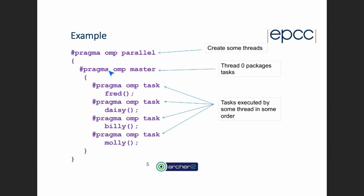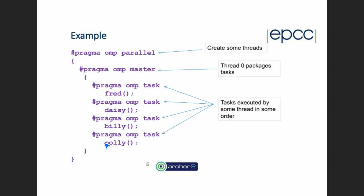What's going to happen is that the master thread executes this block of code, encounters all these task constructs, packages them up, and all the other threads in the parallel region are available to execute them. This looks quite weird at first, because if you're used to OpenMP without tasks, it looks like only one thread is doing something — we have a parallel region that just contains a master region, so it looks like only thread zero is doing anything. But what thread zero is doing is not necessarily executing these tasks — it's creating tasks to be executed by other threads.